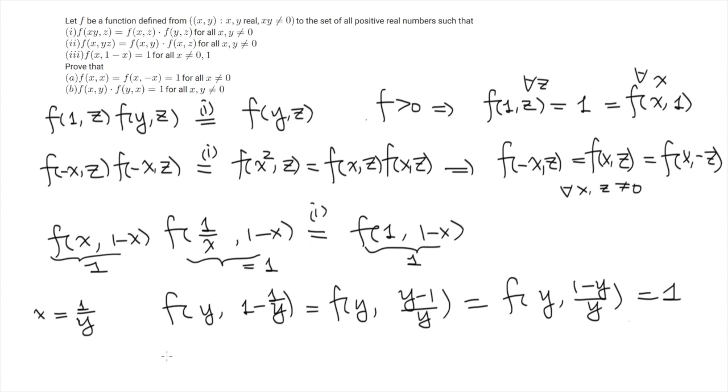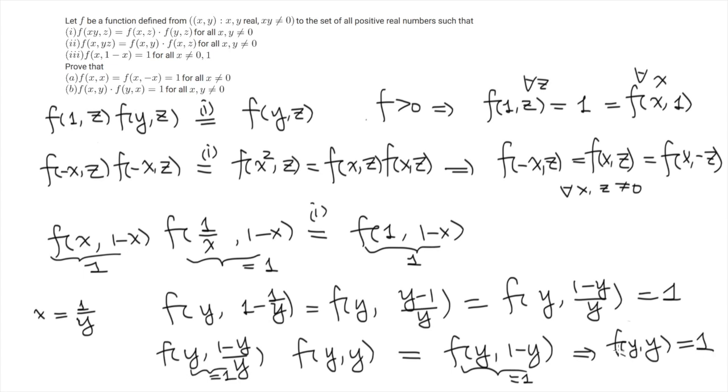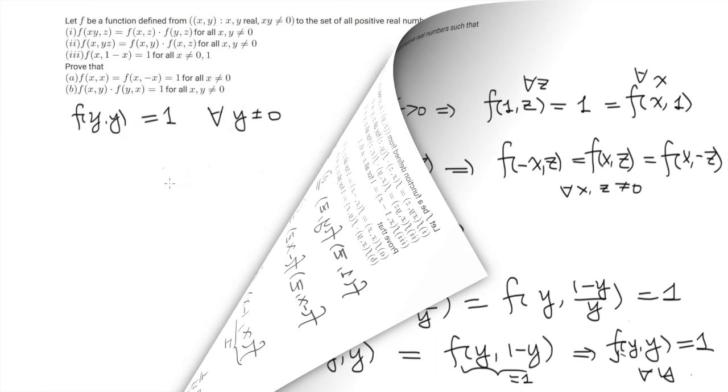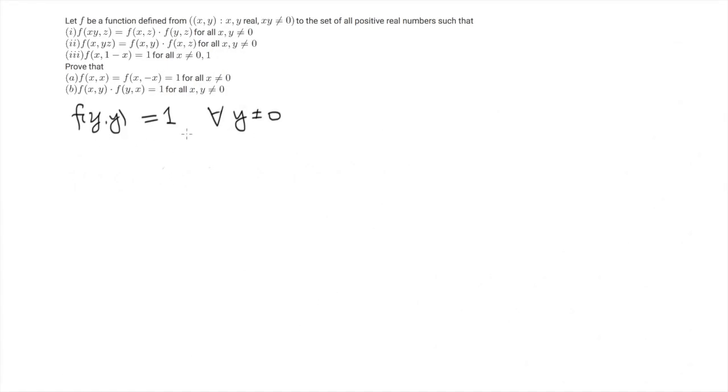Then now I'm sure that you can figure out what we are going to do. So I just multiply this term by f of y, y. So f of y, 1 over 1 minus y over y times f of y, y, this gives f of y, 1 minus y. And f of y, 1 minus y equals 1. The first term equals 1. And this implies that f of y, y equals 1. So now we have proved the first statement.